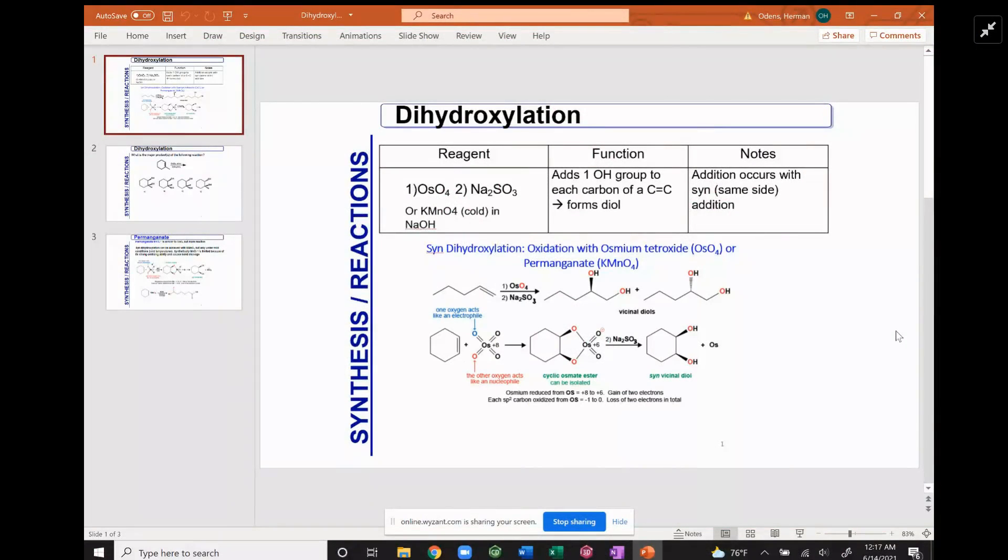Welcome. I'm going to talk today about dihydroxylation. There are two ways to make dihydroxylation: one is with osmium tetroxide in the presence of sodium bisulfite, and the other is with potassium permanganate cold in the presence of sodium hydroxide.